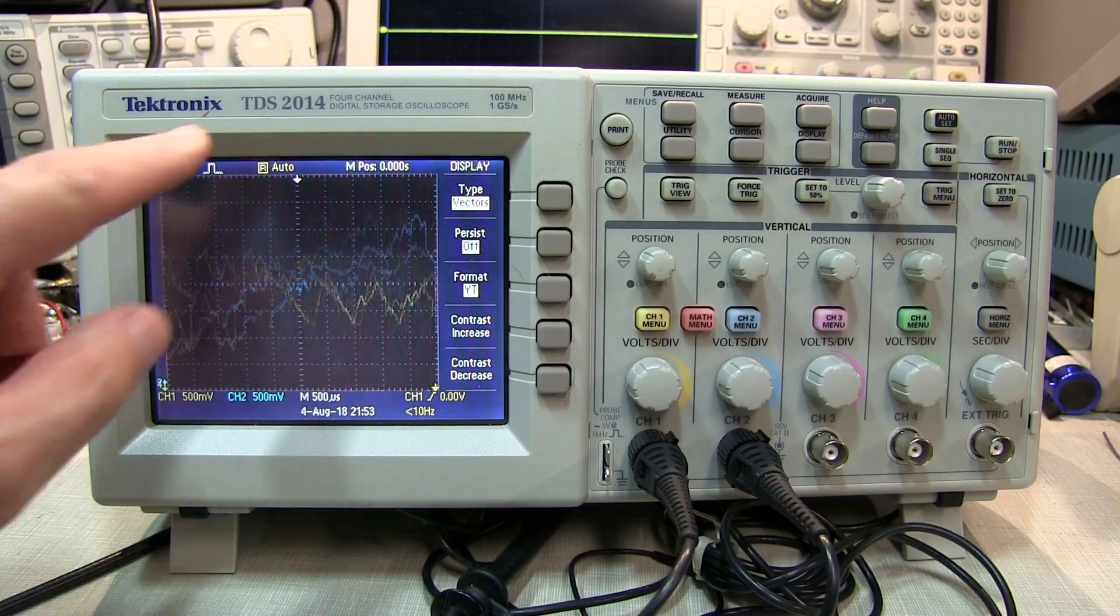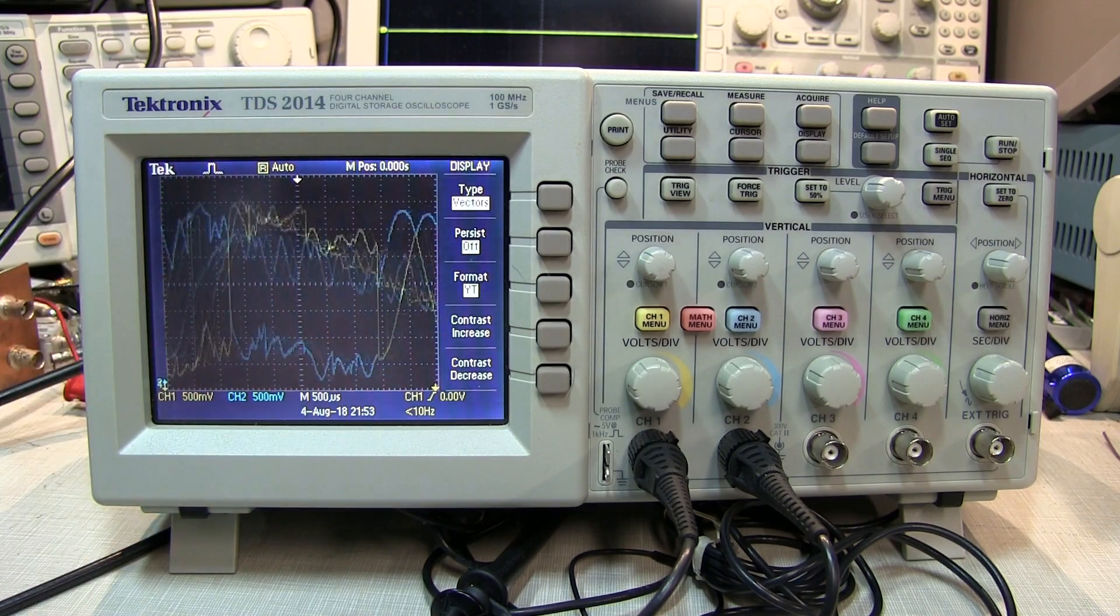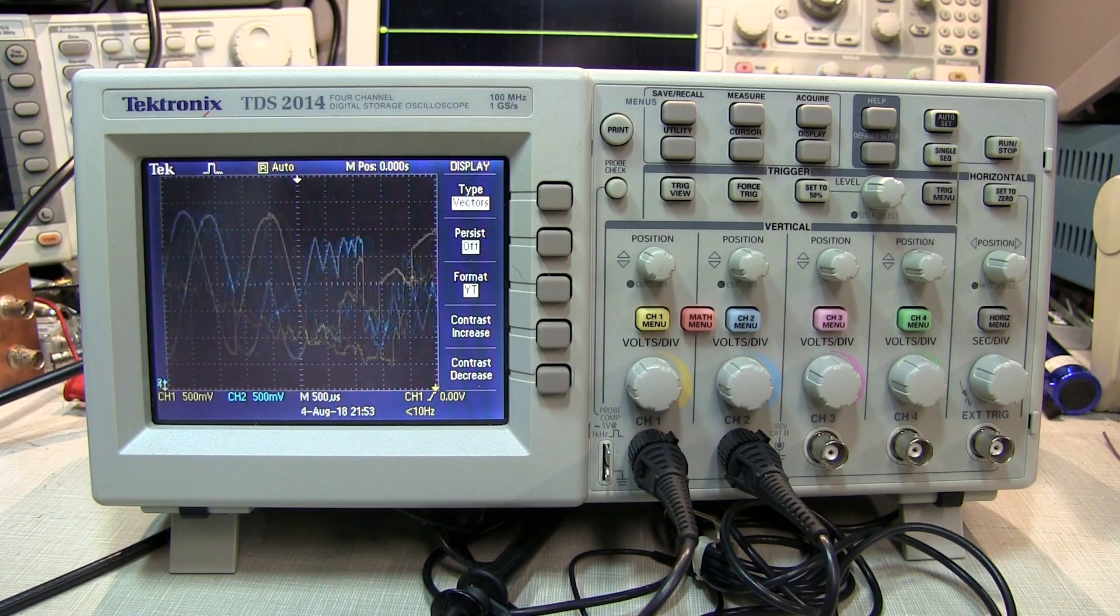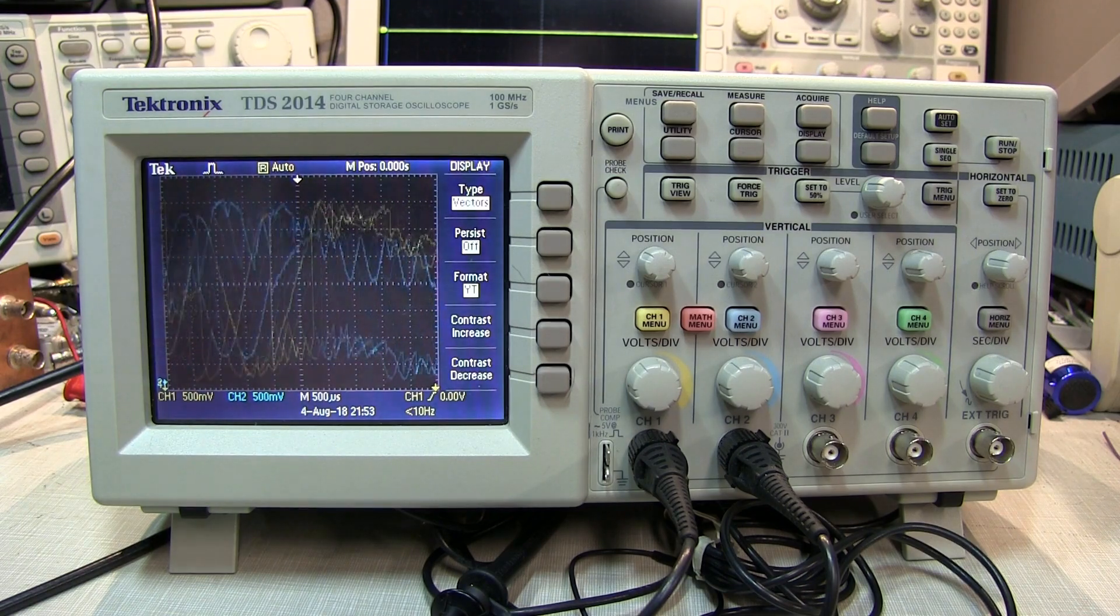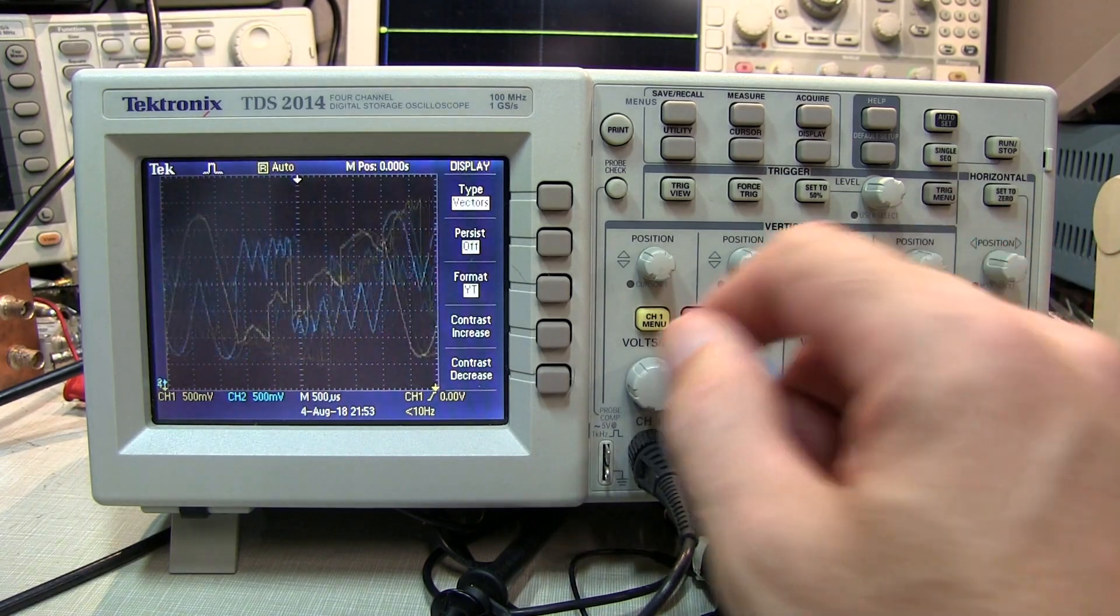Let's first take a look at it on this old Tektronix TDS 2014. This scope is 15 years old or older, so it represents a pretty early stage of technology of digital scopes, but there's a lot of these around, so let's take a look at it on this one.